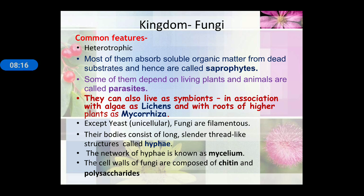Kingdom fungi are mainly heterotrophic. Most of them absorb soluble organic matter from dead substrate and hence are called saprophytes. Some fungi are parasitic. Fungi form a symbiotic association with algae known as lichen, and sometimes fungi form an association with the roots of higher plants known as mycorrhiza. Example: yeast is unicellular, and the slender thread-like structures are known as hyphae; the network of hyphae is known as mycelium. Cell walls of fungi are composed of chitin and polysaccharides.